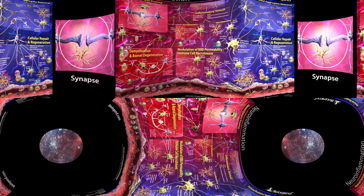Aberrant synaptic pruning is a consequence of excessive synapse removal by reactive microglia. In response to pro-inflammatory insults, reactive astrocytes produce an unknown factor called Protein X, which triggers the production and shedding of complement components by neurons. Excessive tagging of neurons by activated complement proteins and their recognition by complement receptors on reactive microglia results in phagocytosis and removal of synapses. Aberrant elimination of synapses that should normally remain intact could play an important role in neurodegeneration.